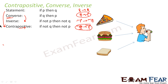Let me repeat once again. For converse: 'con' means change direction, so p to q becomes q to p. For inverse: no change of direction, just invert — p becomes p' (complement), q becomes q' (complement). For contrapositive: you both change direction and add negative signs. Why? Because the contrapositive and the statement are both the same, so if you only change direction the meaning changes. To retain the meaning, you must add negative signs in both places.